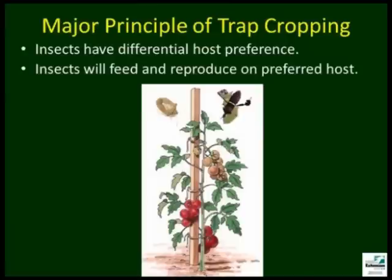Trap crops are based on the principle of host preference. That is, insects have a strong preference for food and actively seek the most appropriate host plants. Trap crops lure insects away from the main crop, and insecticide applications made to the trap crop prevent migration of pests into the main crop.